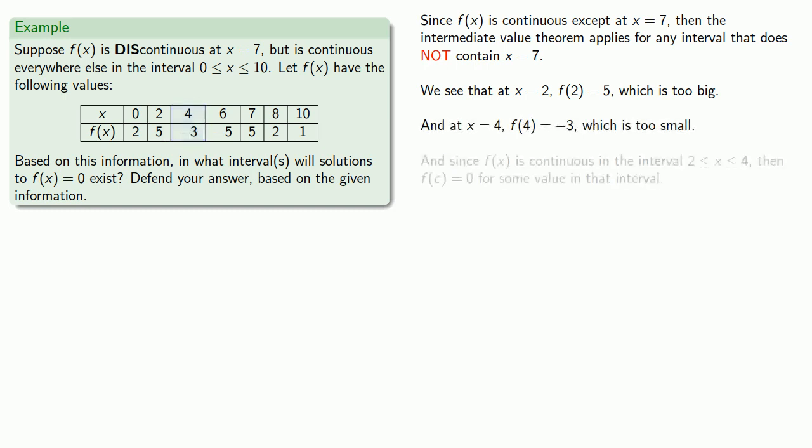And since f of x is continuous in this interval between 2 and 4, then I know that some place in between is going to be just right. So f of c will be 0 for some value in this interval.